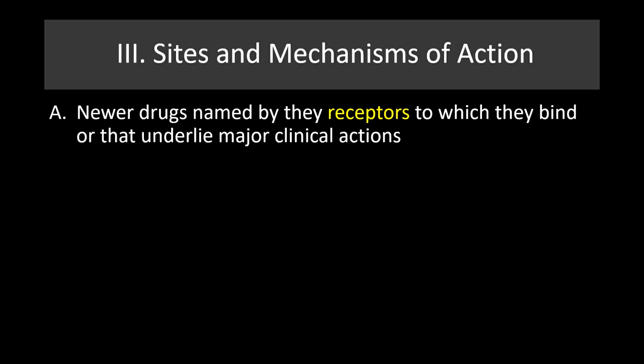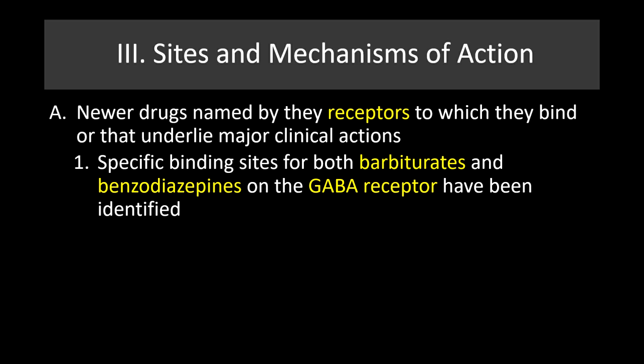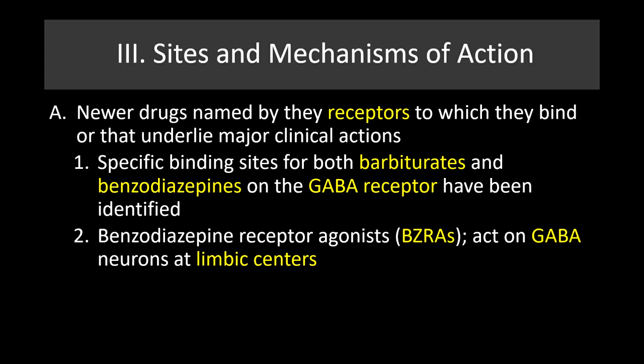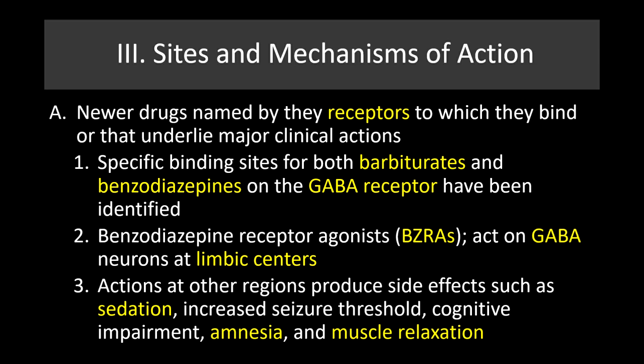Now let's talk about the sites and mechanisms of action. Newer drugs tend to be named by the receptors to which they bind. There are specific binding sites for both barbiturates and benzodiazepines on the GABA receptor. Activation of the GABA receptor is what causes the anxiolysis and sedation. Benzodiazepine receptor agonists act on GABA neurons at the limbic centers; actions at other regions produce side effects such as sedation, increased seizure threshold, cognitive impairment, amnesia, and muscle relaxation. It is the action at the limbic centers — particularly the amygdala — where we get the reduction in anxiety.